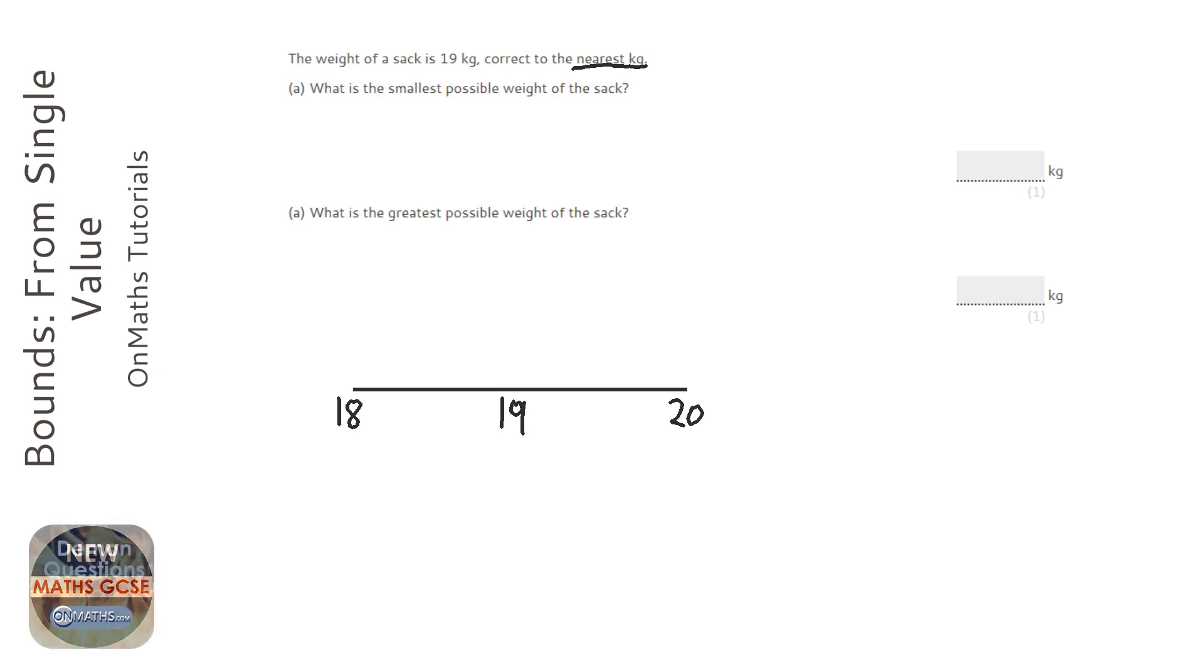Then I think, what's the cutoff point between 18 and 19? So I draw a line down here, and the cutoff point would have been 18.5. If it was 18.4, it would have been rounded to 18, but 18.5 or more, it's rounded to 19.